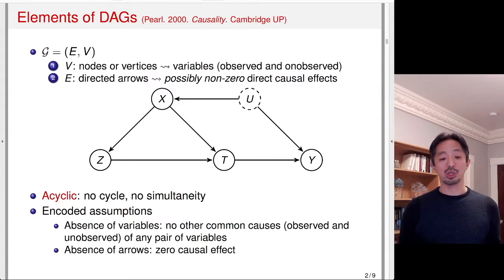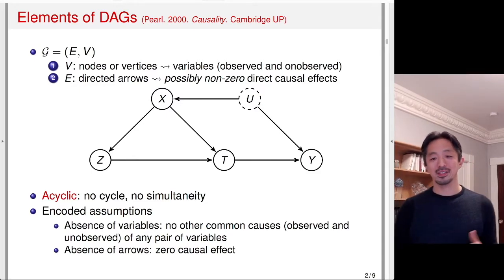The encoded assumption also includes the absence of arrows. I said that the existence of arrows means possibly there's non-zero direct causal effects, but the assumption is really about the absence of arrows. The fact that U doesn't affect T, for example, there's no arrow from U to T means that U has zero causal effect on T. And that's an assumption. Similarly, there's no arrow going from X to Y, which means that X doesn't have a direct effect on Y. Again, there's no arrow going from U to Z, so U has no direct effect on Z either. As you can see, the absence of variables and the absence of arrows represent the assumptions that are encoded in this graph. What's not there is the things that we are assuming.